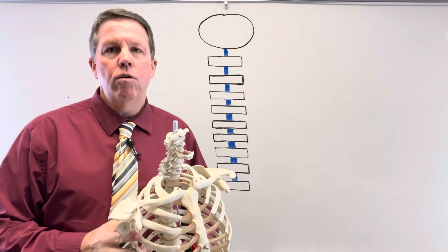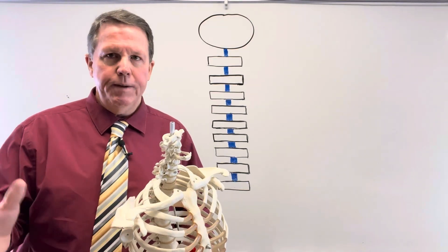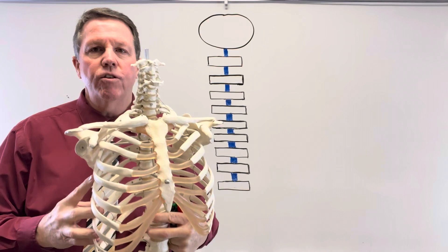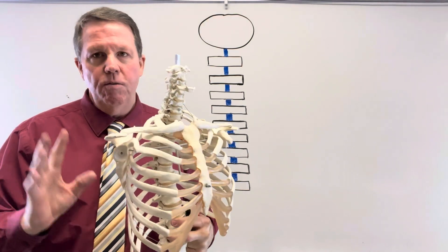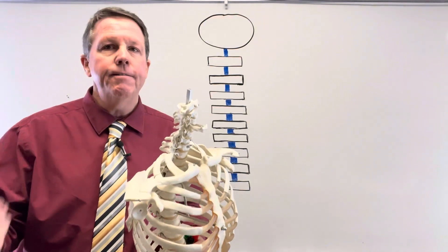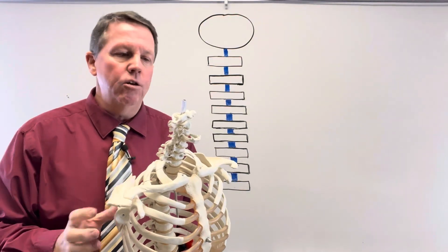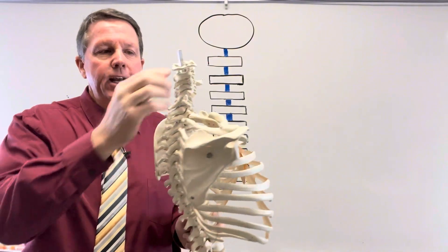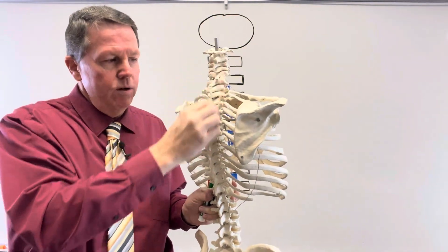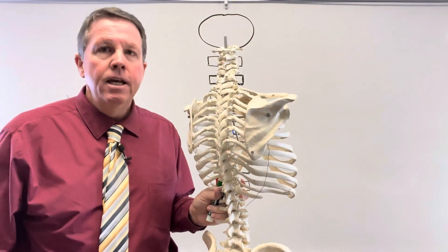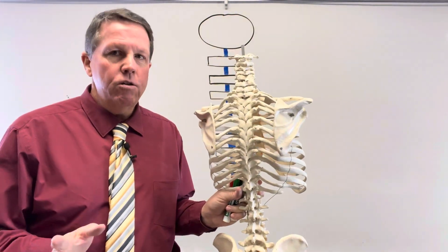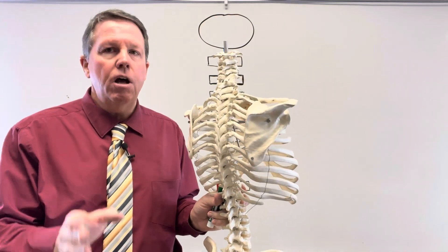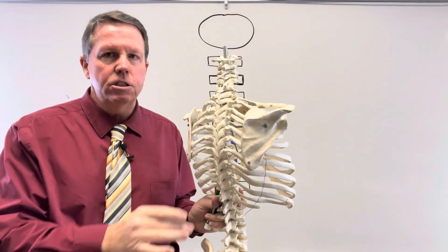Hi everybody, today we are going to be talking about spinal cord injuries. I want to go over a quick review of the skeletal system and tell you the difference between the spinal column and the spinal cord. What you're looking at here — all these bones going down the back — that's your spinal column. Your spinal column is made of bone, and it protects your spinal cord.